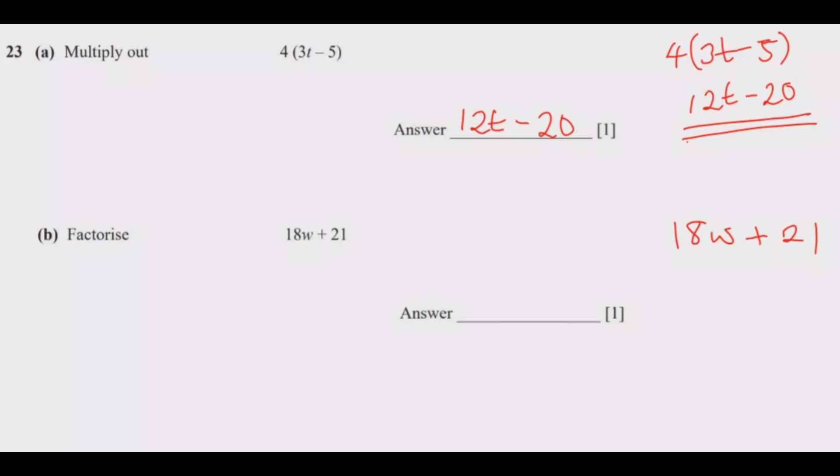Then, 4 can't go in 21, 5 can't go in both, 6 can't go in 21, 7 can go in 21, but not 18. So, the biggest number we have that can go in 18 and 21 is 3.